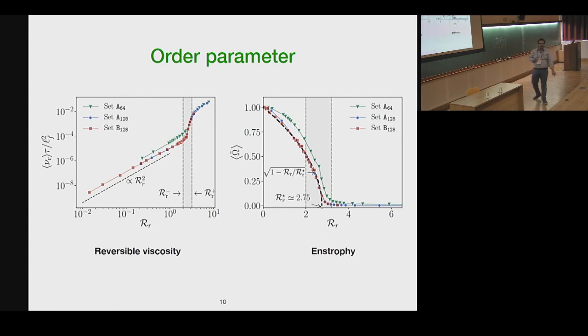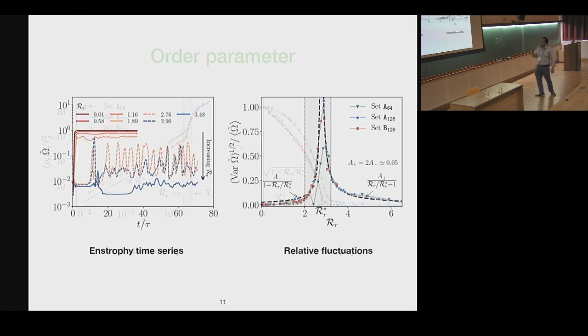There is a crossover region in which the order parameter smoothly goes from one phase to the other phase. And for the enstrophy, you see that you can fit a square root profile. And if you look at the dynamic evolution of the enstrophy, there are very low fluctuations at very high or small values of r, but at the intermediate, you see the time series is bursty, and you can quantify that by looking at the fluctuations and looking at the standard deviation.